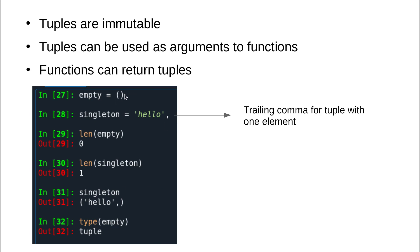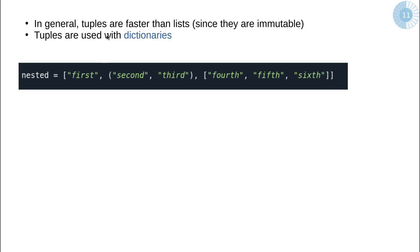In general, tuples are faster than lists because they are immutable. Lists contain more overhead — Python has to track indices and allocate more memory when the list changes. Since tuples don't have those problems, they are generally a little faster. Tuples are commonly used with dictionaries, which is another data structure we will see shortly. Here is an example of a list which contains various things: the first element is a string, the second is a tuple, and the third is a list of strings.